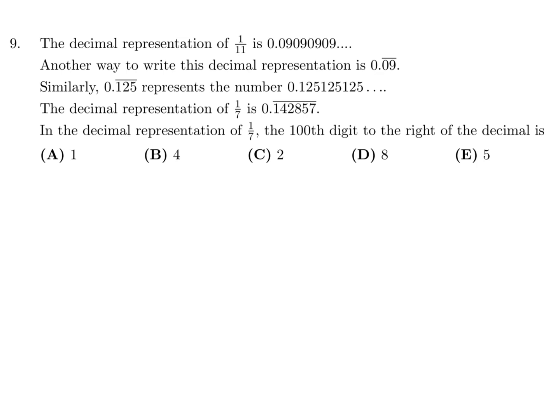The decimal representation of 1 over 11 is 0.09 repeat. Another way to write this is 0.09 with a bar. Similarly, 0.125 bar represents the number 0.125 repeat. The decimal representation of 1 over 7 is 0.142857 repeat. In the decimal representation of 1 over 7, the 100th digit to the right of the decimal is... So 0.142857, this repeats, right? So every 6 it's going to repeat. It looks like the 6th number is 7, and then when you repeat it again the 12th number will be 7, and then when you repeat it again the 18th number will be 7. That's how we're going to figure out what is the 100th digit, because there's a pattern here.